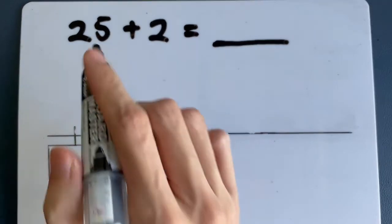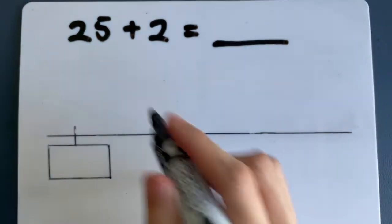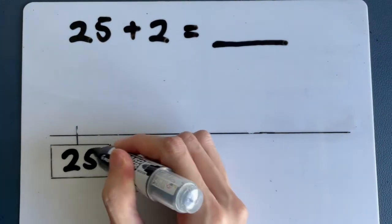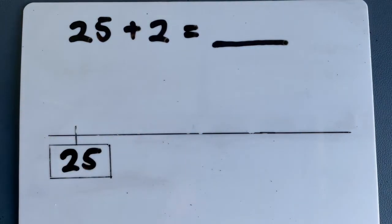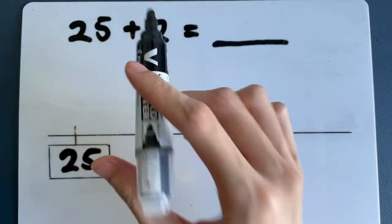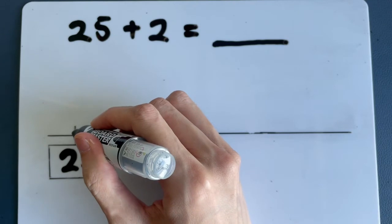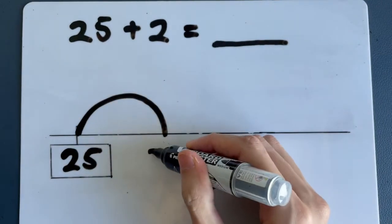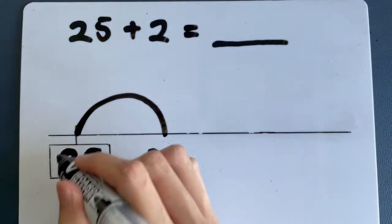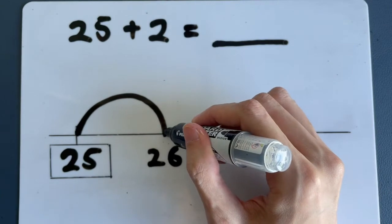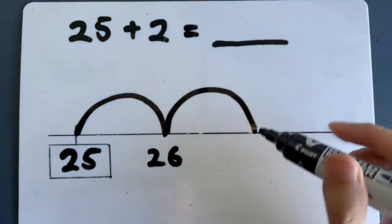So our first step is to copy down this number, 25, into the box, and this will be our start line. We are going to do jumping because this is called the jump technique. So we are going to jump twice. Let's jump from the start. Jump one time, and you get 26, because one more than 25 is 26. So that's one jump. Now let's make a second jump.